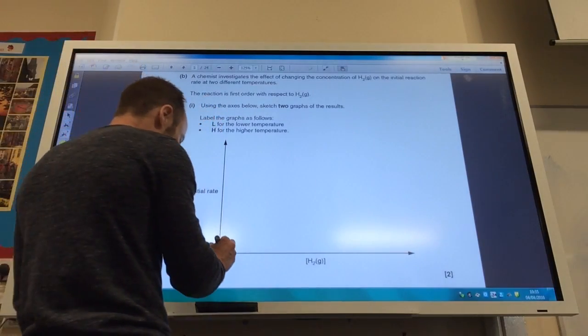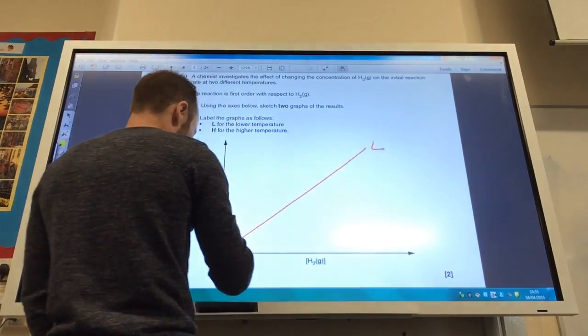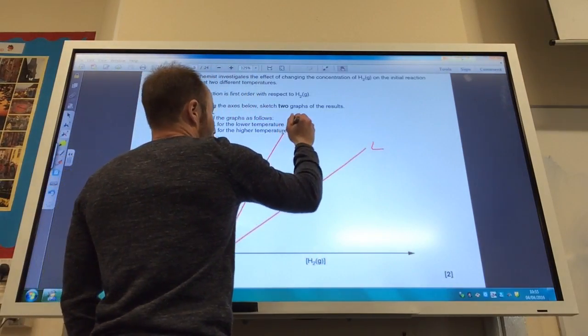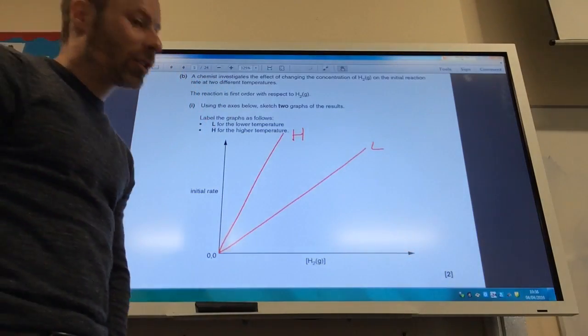So the main thing is start at 0,0, straight line like that for L, and then a steeper line for H, like so.